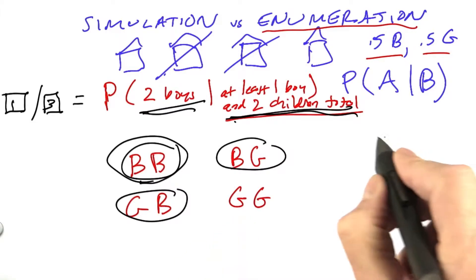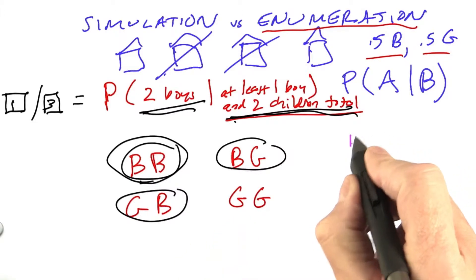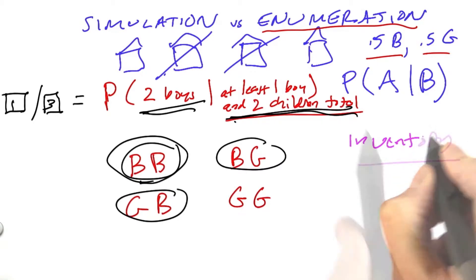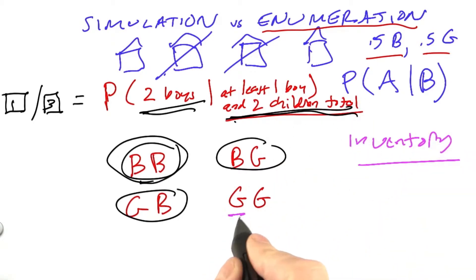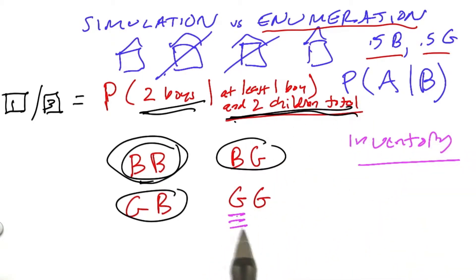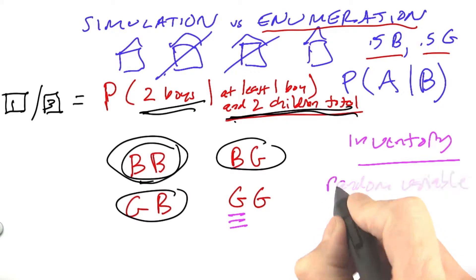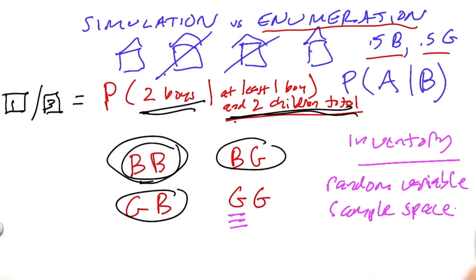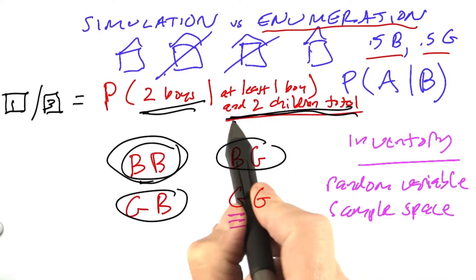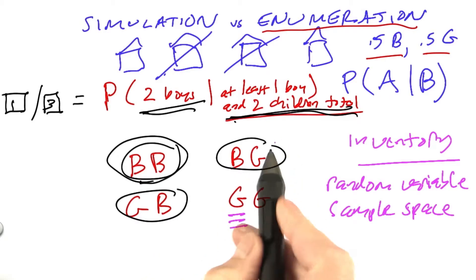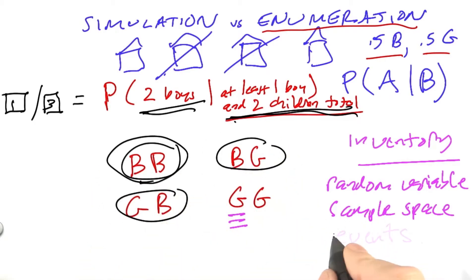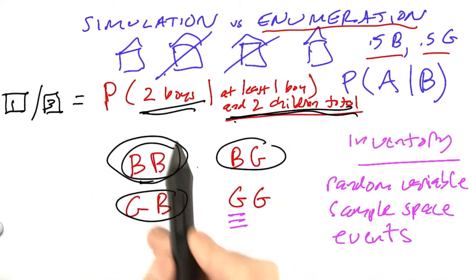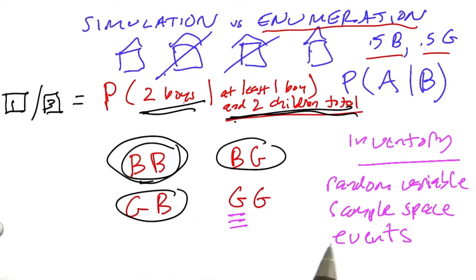Let's start modeling this. We're going to do our concept inventory. What do we have? Well, these individual results here come from random variables. A random variable is like the first child born, which can be a boy or a girl. The whole universe is called a sample space. Then these individual sets of circles are called events, like the event of having two boys, or the event of having at least one boy.